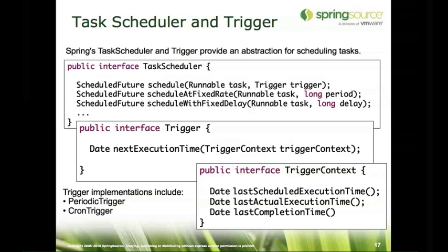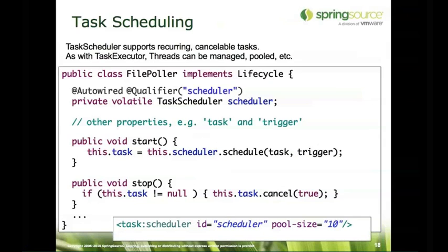We provide two Trigger implementations out of the box: PeriodicTrigger, which allows either fixed rate or fixed delay, and CronTrigger, which takes a cron expression and returns the next execution time accordingly. It's also easy to implement your own custom trigger. The file poller is refactored to use scheduling — instead of injecting a task executor and having a while loop, we inject a task scheduler and schedule the task with a given trigger. This lets you use the file poller with a cron trigger in one application and a simple interval-based trigger in another.